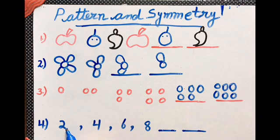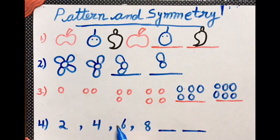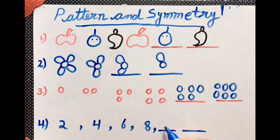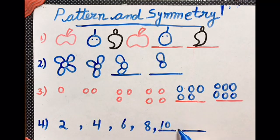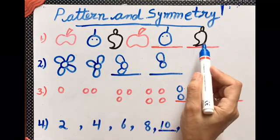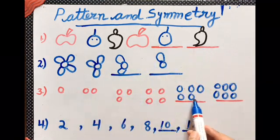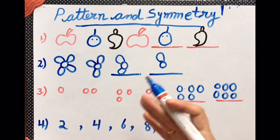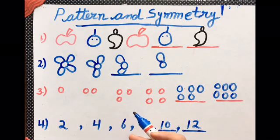Then two, four, six, eight. Then it is the table of two. Then ten, then twelve. So all the pictures or the patterns or the diagrams or the numbers, they are moving in a particular order. So this is a pattern.